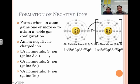In group 5A, you're going to gain three electrons. In 6A, you gain two, and in 7A, you gain one, producing your negative 3, negative 2, and negative 1 charges.